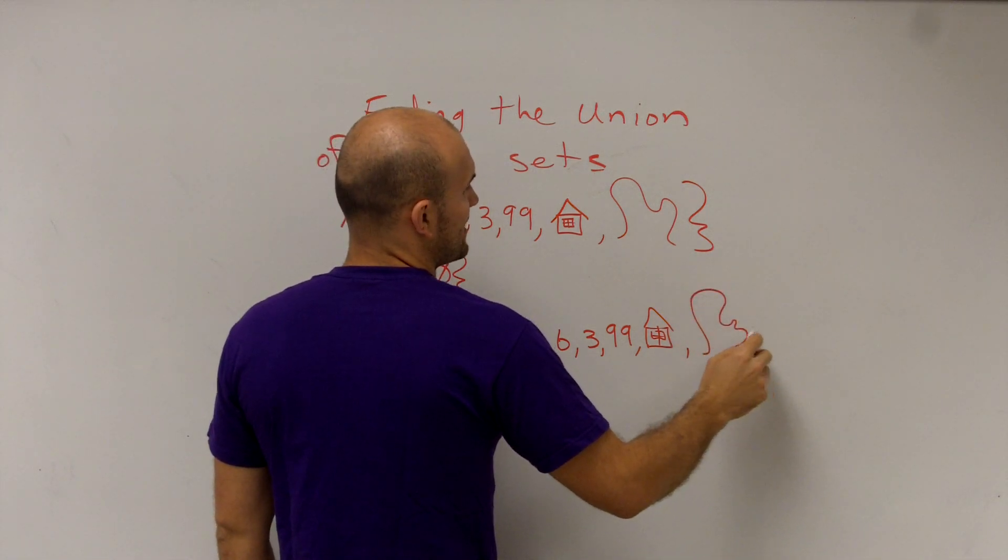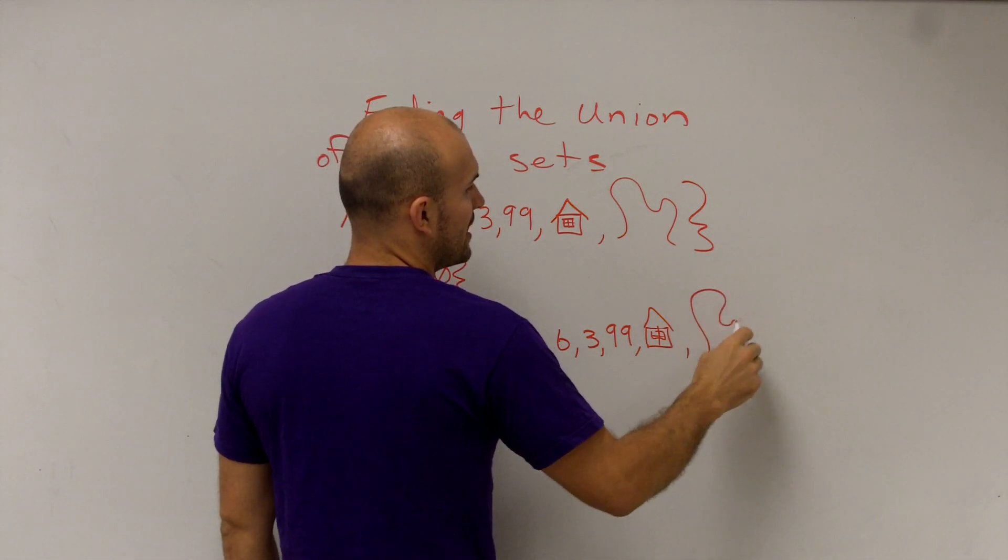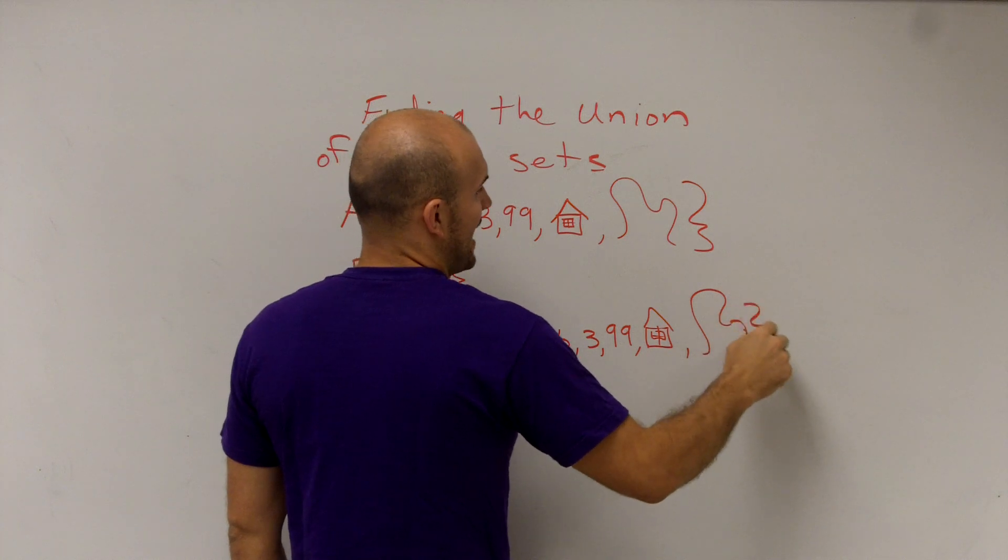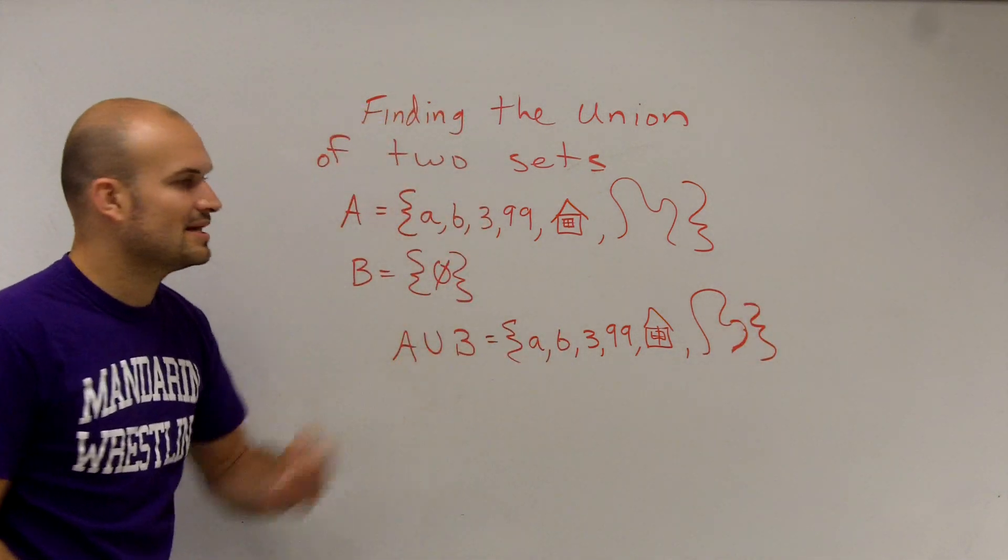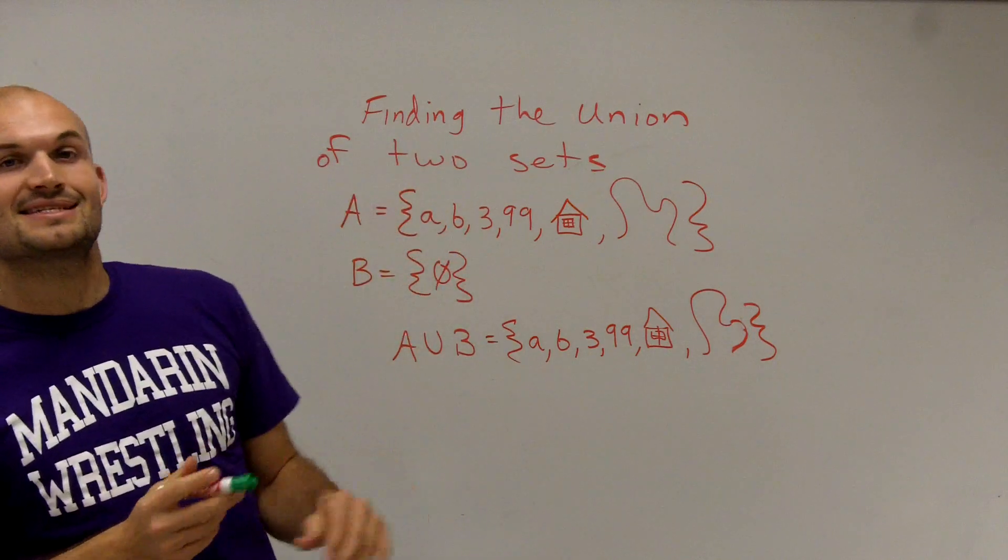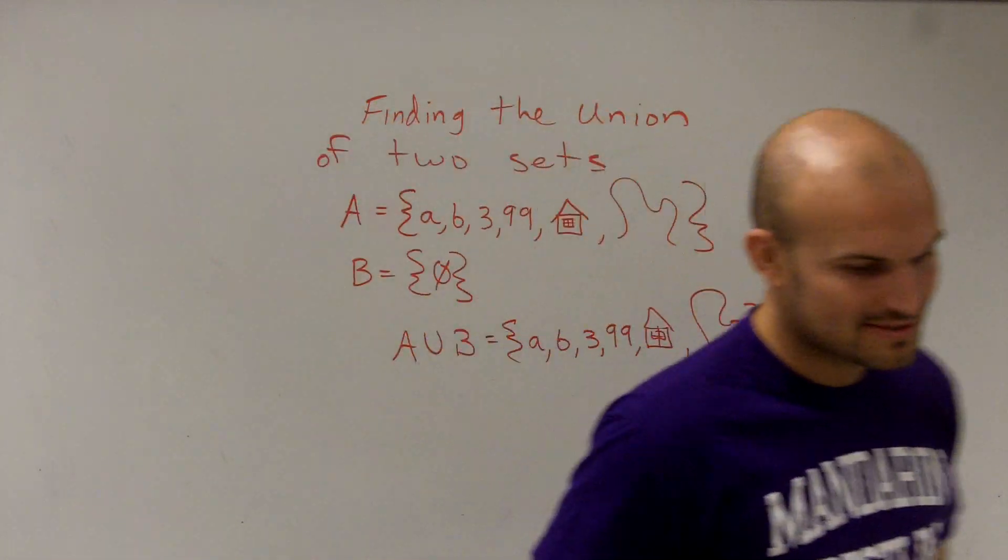So I don't have anything in both sets, but I do have some elements in A. So that's going to be included in my union set. And there you go. That's how you find the union of two sets.